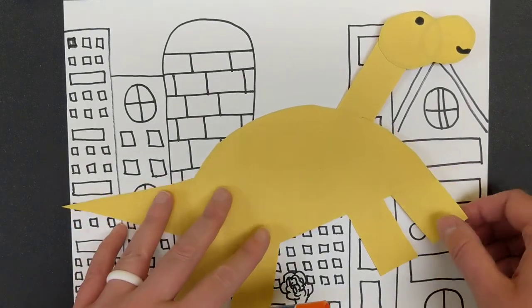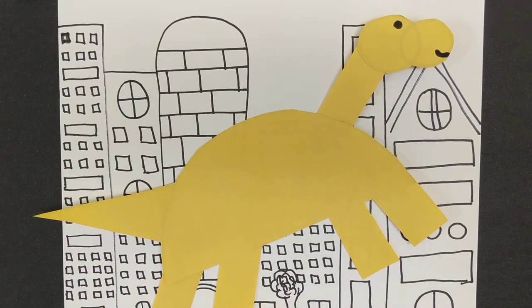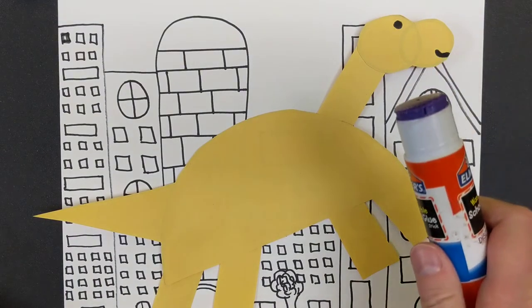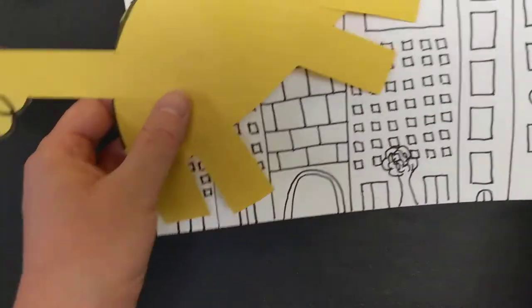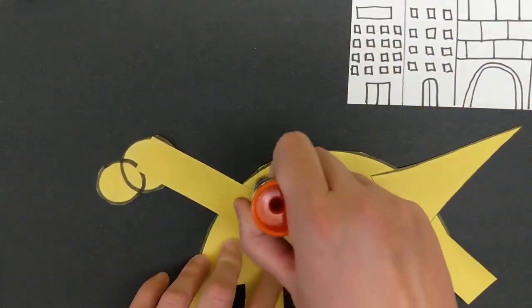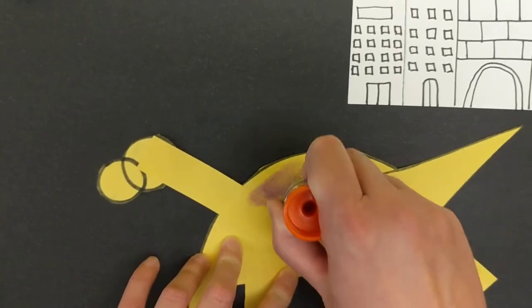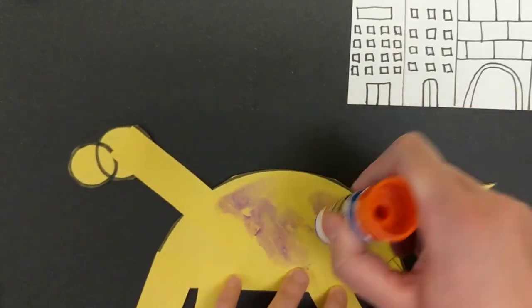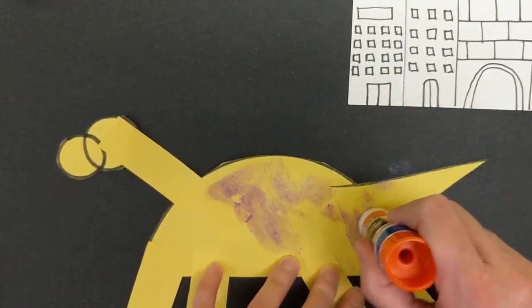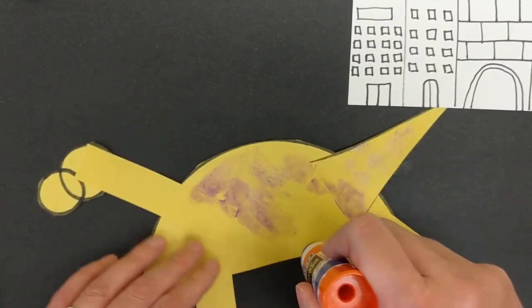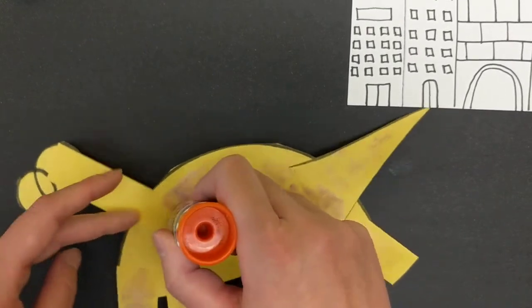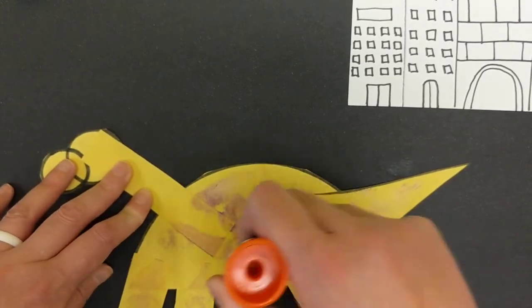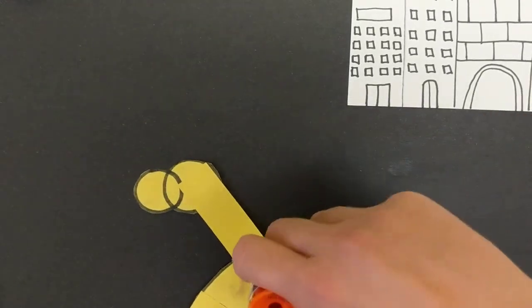All right, I think this looks like a great spot for my dinosaur, so I'm going to get my handy glue stick out. I'm going to move this aside and I'm going to do some quick gluing while hopefully not hurting my dinosaur—we wouldn't want to do that.